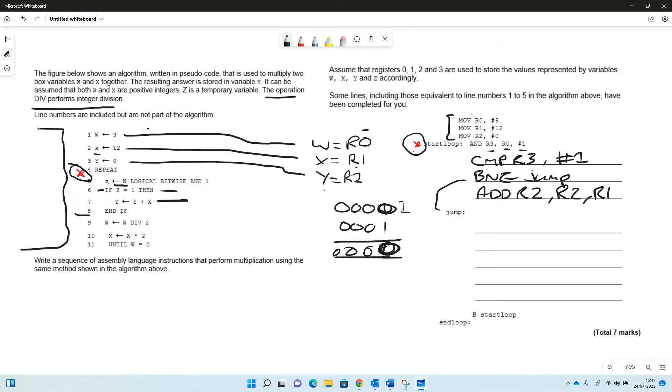So then we've done this piece of code up to the end if, up to line eight. So now we're going to deal with line nine. W takes the value of w div two. So in our jump, we're going to divide. So we left shift right r0, r0, and I'll do the hash there one.